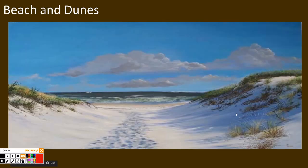Beaches are formed when water weathers down rock, forming sand, and erodes it by dropping it off on the coastline. Dunes are hills of sediment blown by wind erosion and deposited on beach grass.